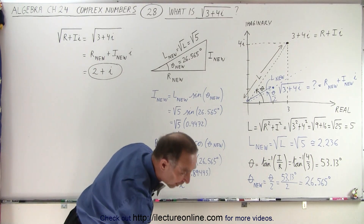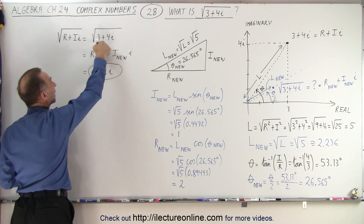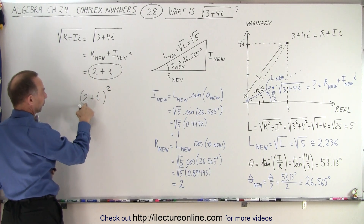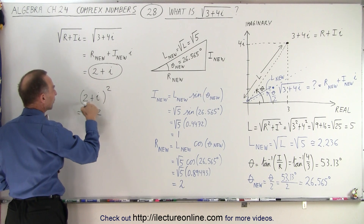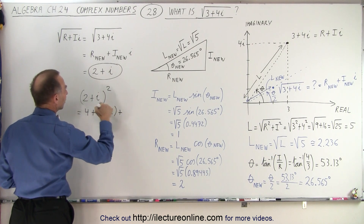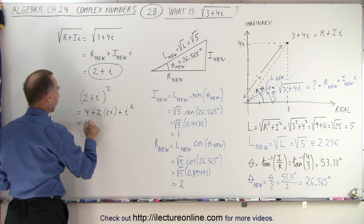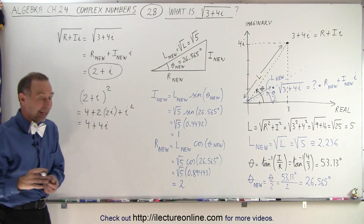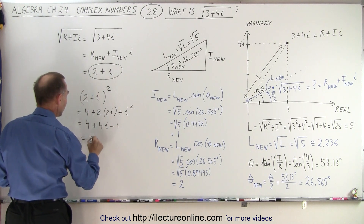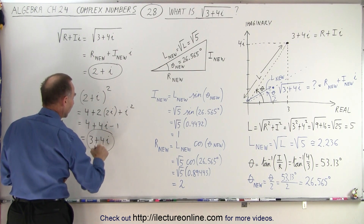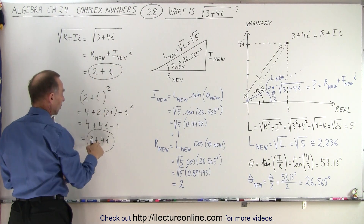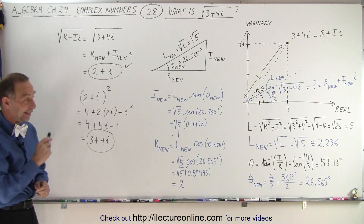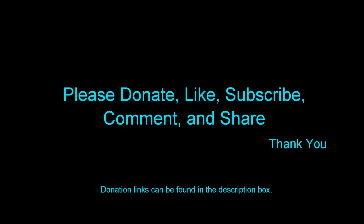Now we're going to check to see if we did it correctly. We're going to square this number to see if we get the original back. So (2 + i) squared equals the first number squared, which is 4, plus twice the product of the two terms, which is 4i, plus the last number squared, which is i squared. But remember, i squared is negative 1, so that gives us minus 1. And so this equals 3 plus 4i — the original number we started with. So the square root of 3+4i is indeed 2+i, and that is how it's done.